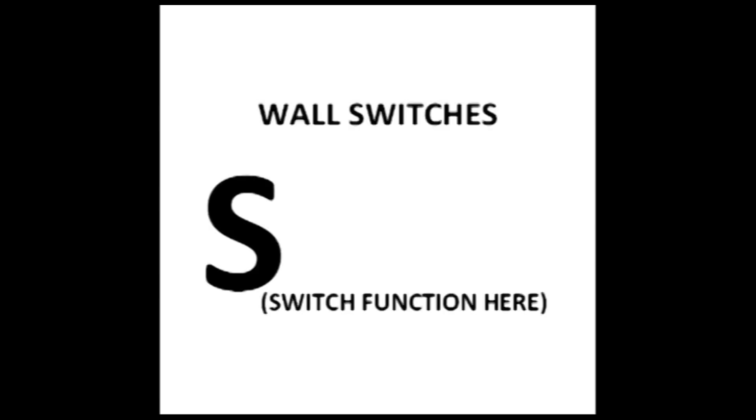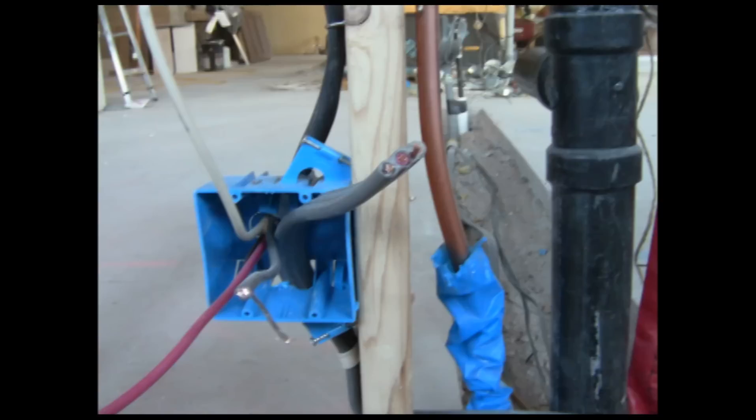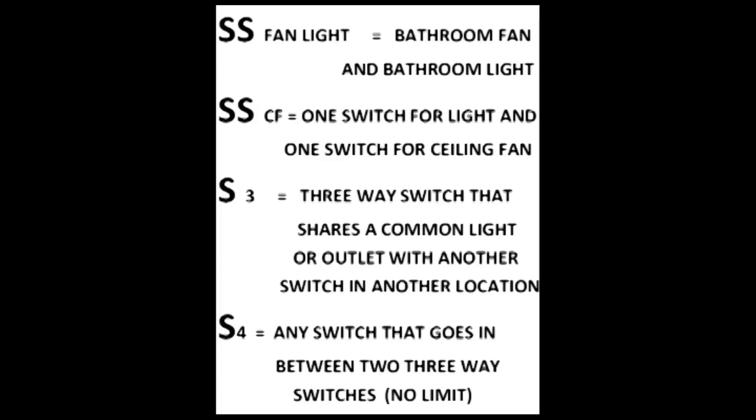Let's move on to wall switches. Switch boxes come in gangs. The number of gangs is the number of switches in the box and also denotes the size of the box. On the print you'll see markings like this: switch switch fan light—which is a switch for a fan in the bathroom and a switch for the light.